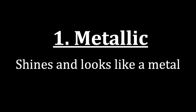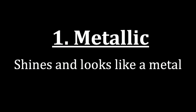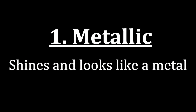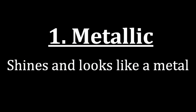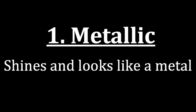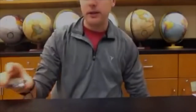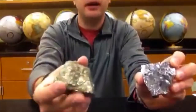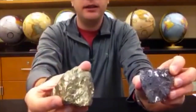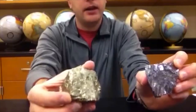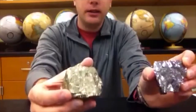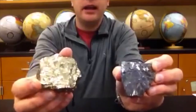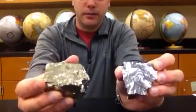The first category we call metallic, which means when we look at the mineral, the light coming off it is shining like a metal. When we look at a couple of minerals that have that luster, right away you can see these are metallic. Not only do they shine like a metal, but they look like a metal.